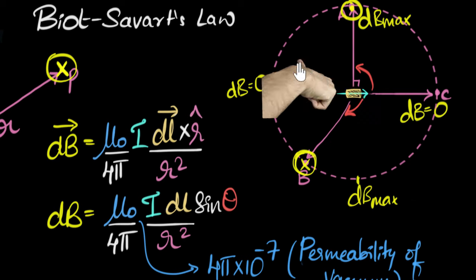Now that we know how to calculate the magnetic field due to tiny pieces of wire, if we want the total magnetic field due to the entire wire, we sum up the contributions from each tiny piece — we have to do an integral. We'll look at some problems in future videos.